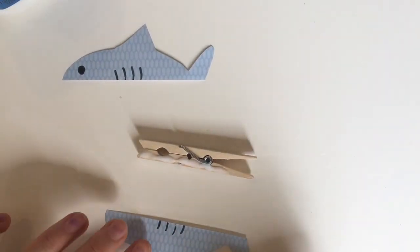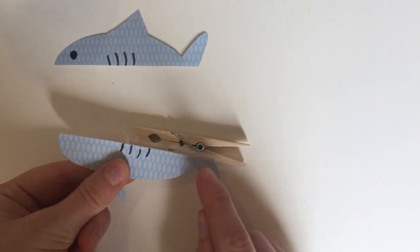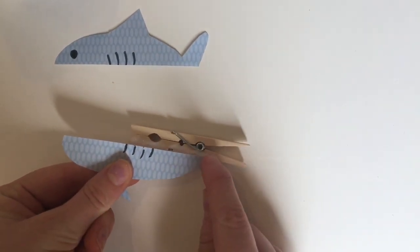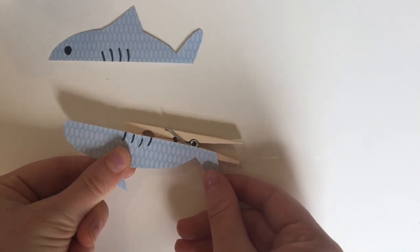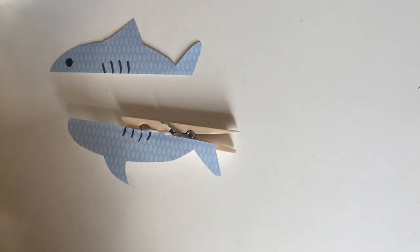Now glue the two halves of your shark onto both sides of the clothespin, and you want to put the tail a little bit back from the hinge. You can also use hot glue.